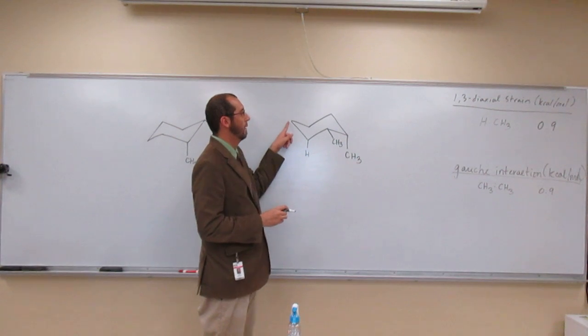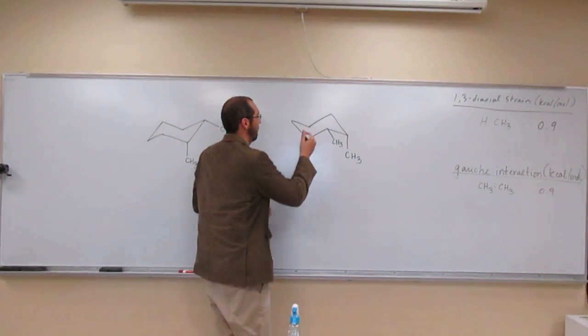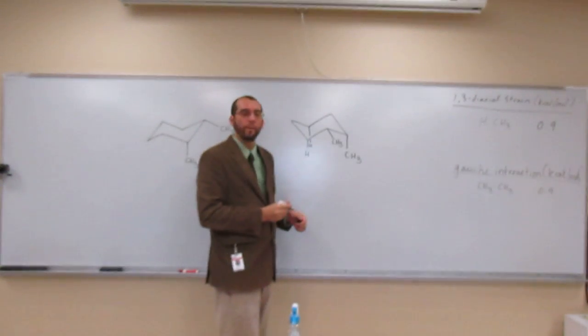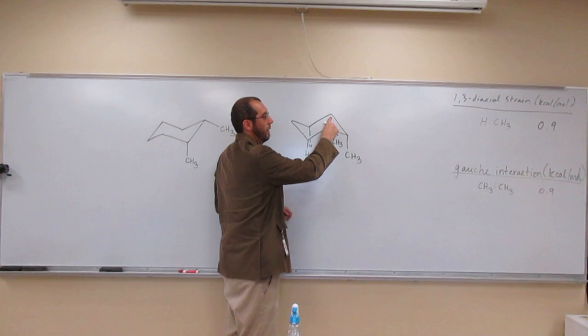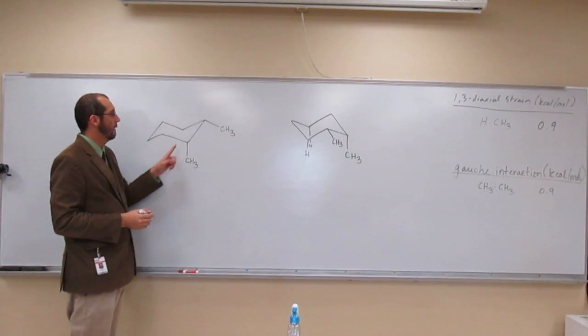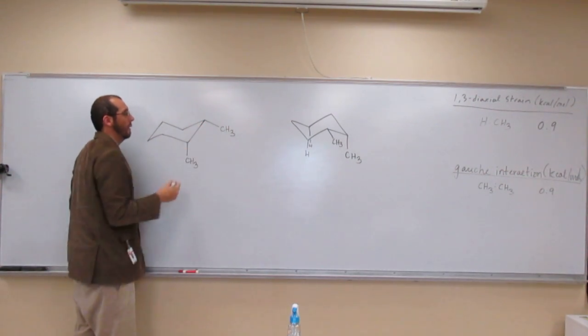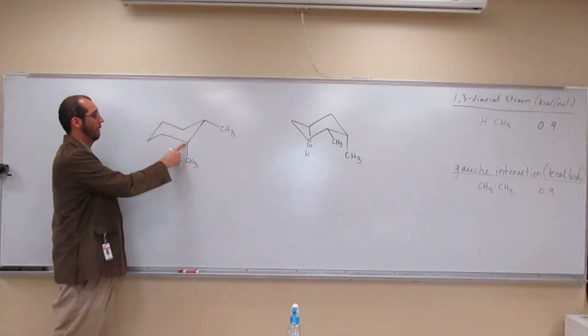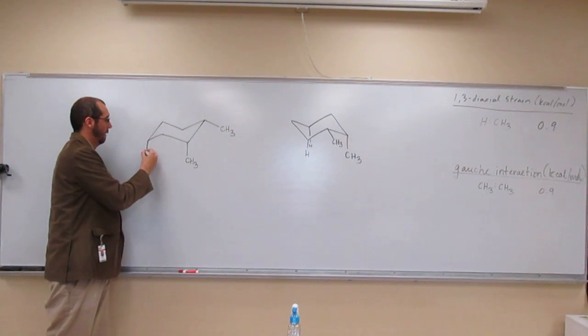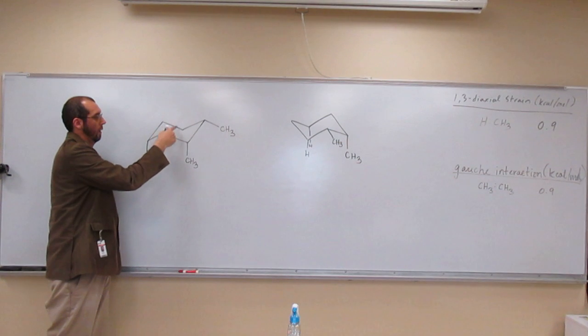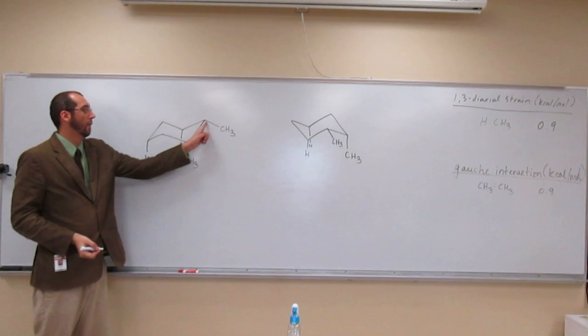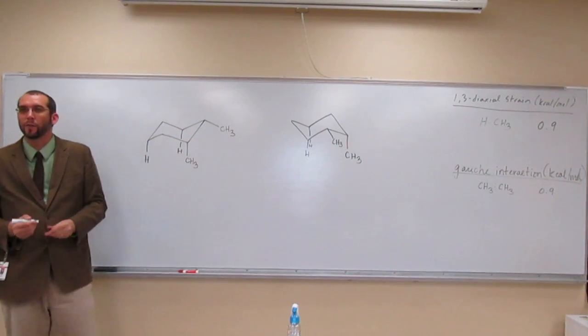One on this one? No. This one? Yes. Like that? One on this one? No. Now let's go over here. Tell me where the 1,3-diaxial is. I'll just point to the carbon and you say yes or no. No. No. No. No. Yes. No. No. No. Yes.